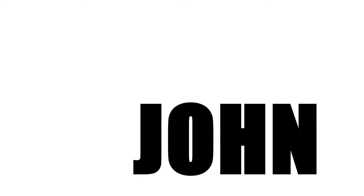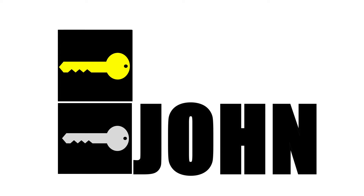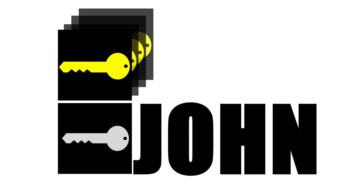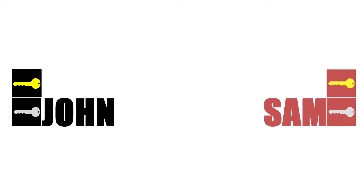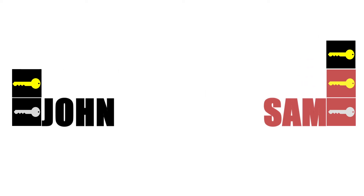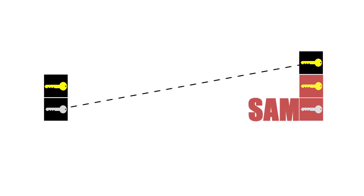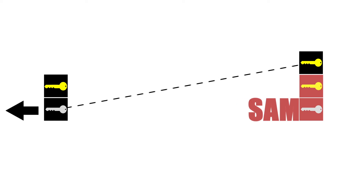We're going to start with John. John has a key pair — a secret key and a public key. His public key can be copied as many times as he wants, so that he can distribute it to everyone he wants to communicate with. Let's say John gives his public key to Sam, and Sam adds it to her collection of keys, her key ring. This means that Sam will now have an encryption path back to John. She would begin by encrypting with John's public key, send the encrypted message, and then John could decrypt the message with his secret key.